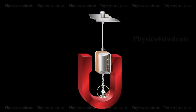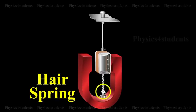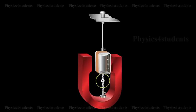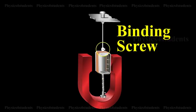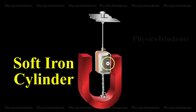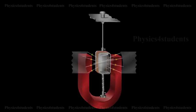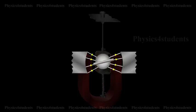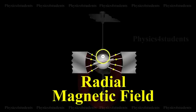The lower end of the coil is connected to a hair spring of phosphor bronze having only a few turns. The other end of the spring is connected to a binding screw. A soft iron cylinder is placed symmetrically inside the coil. The hemispherical magnetic poles produce a radial magnetic field in which the plane of the coil is parallel to the magnetic field in all its positions.